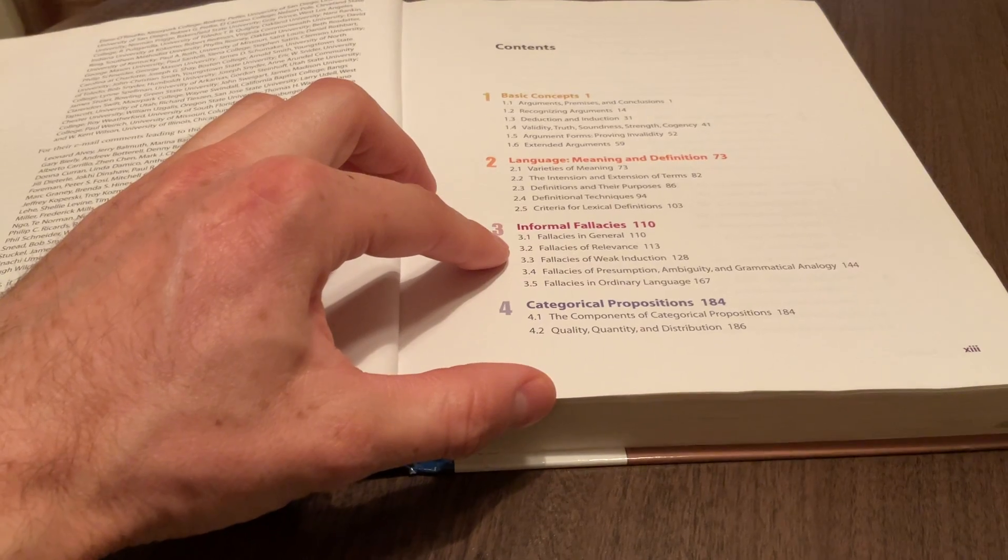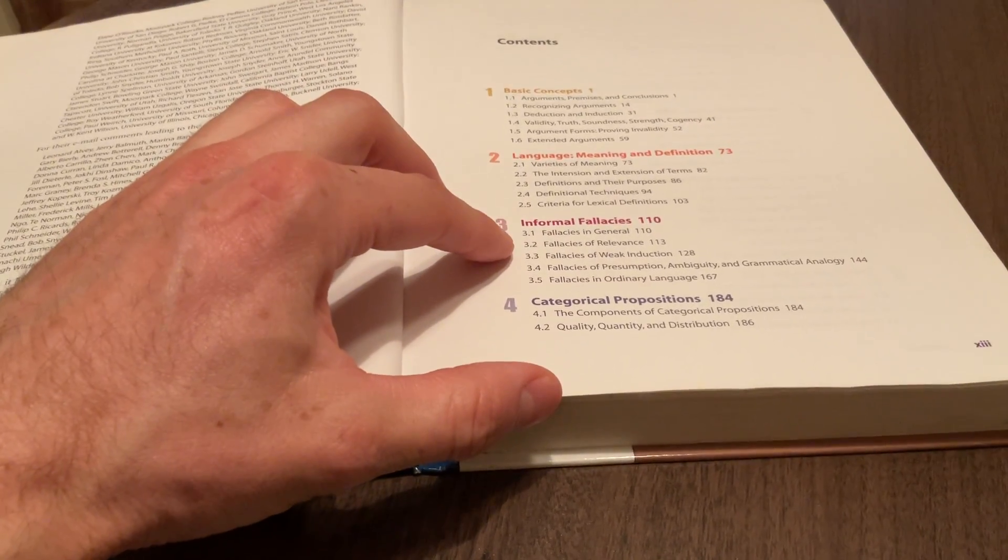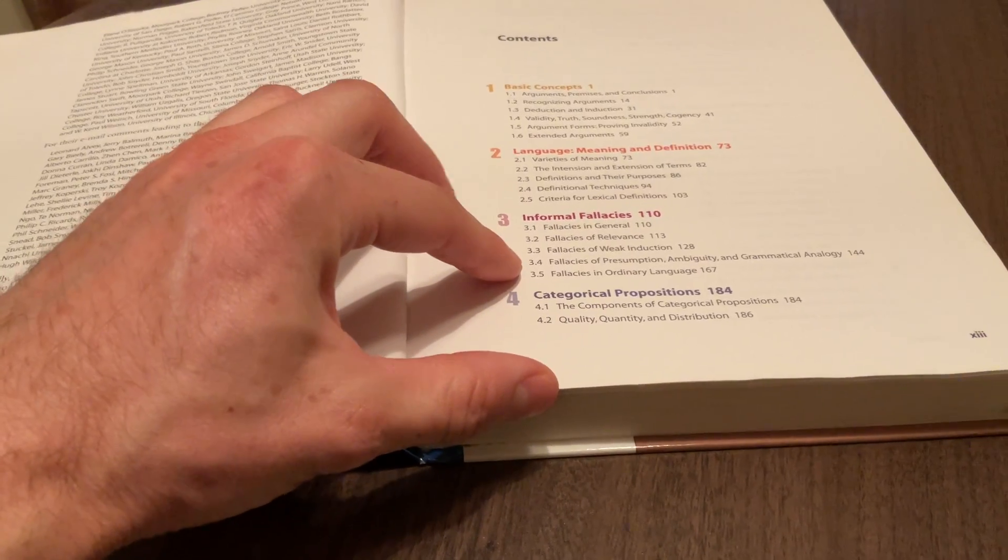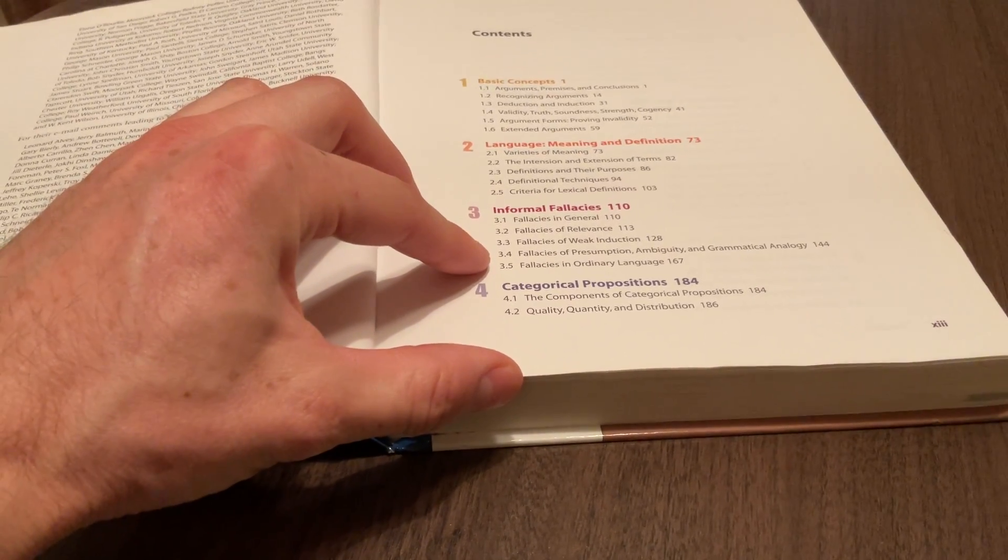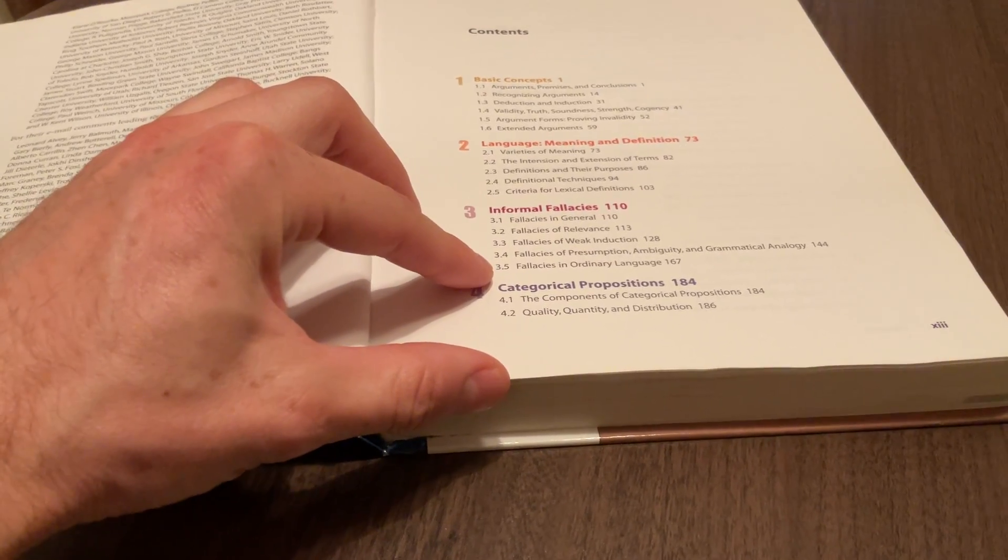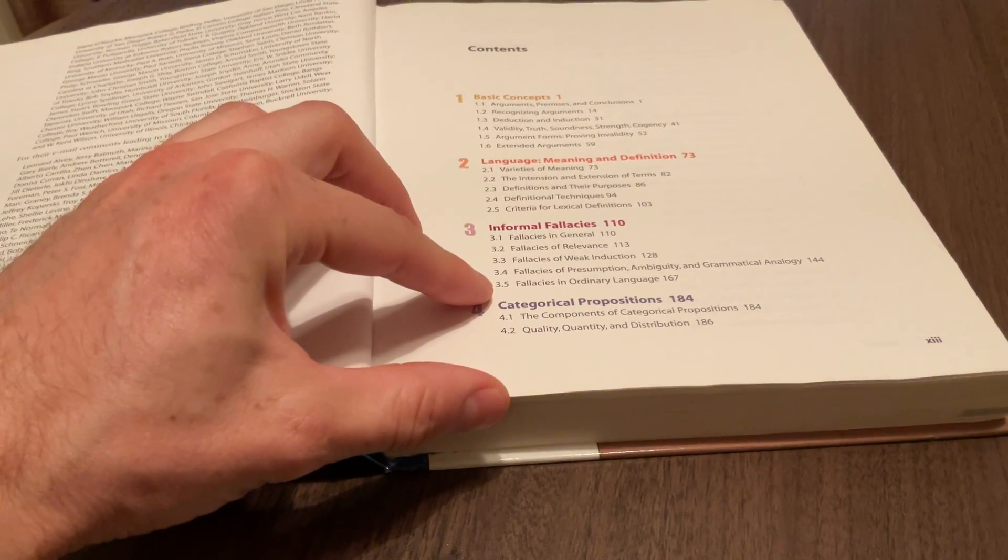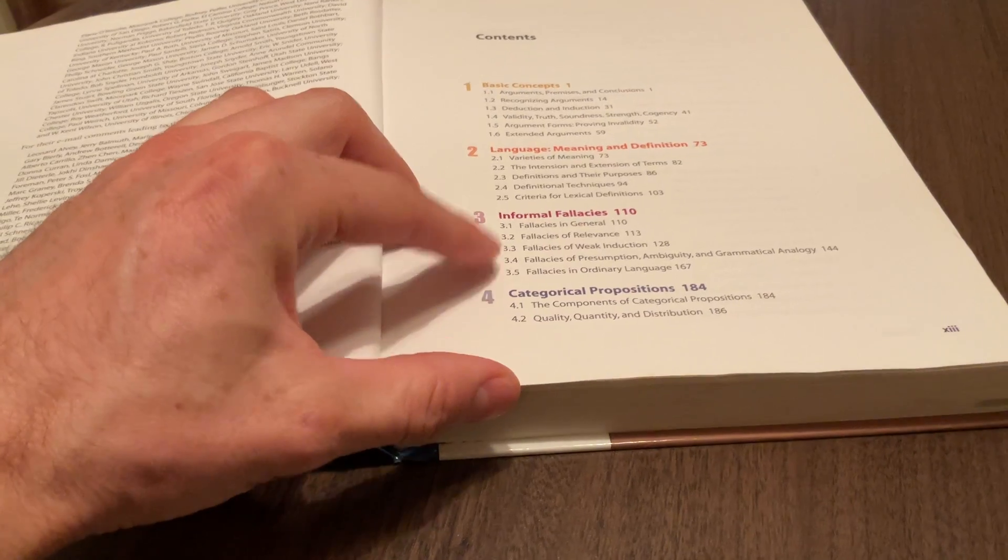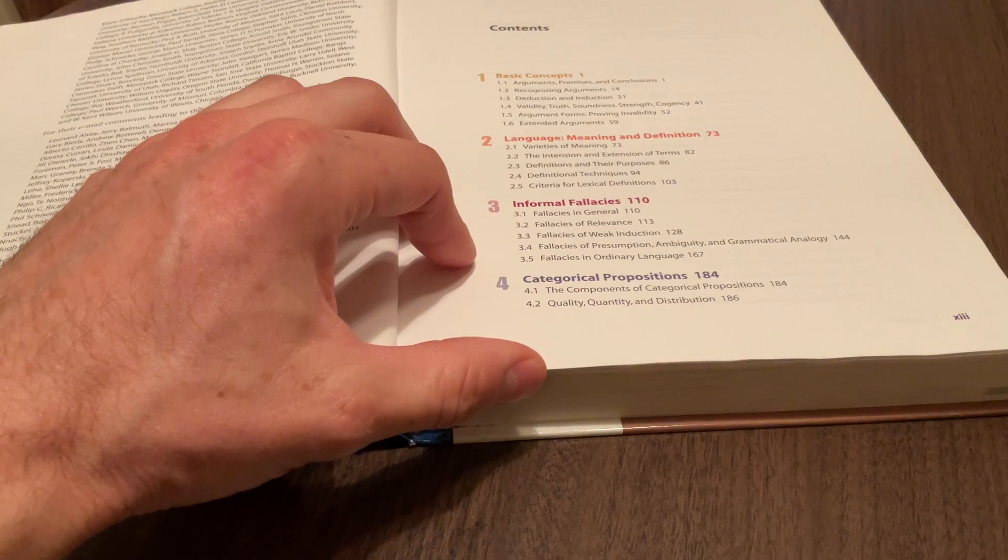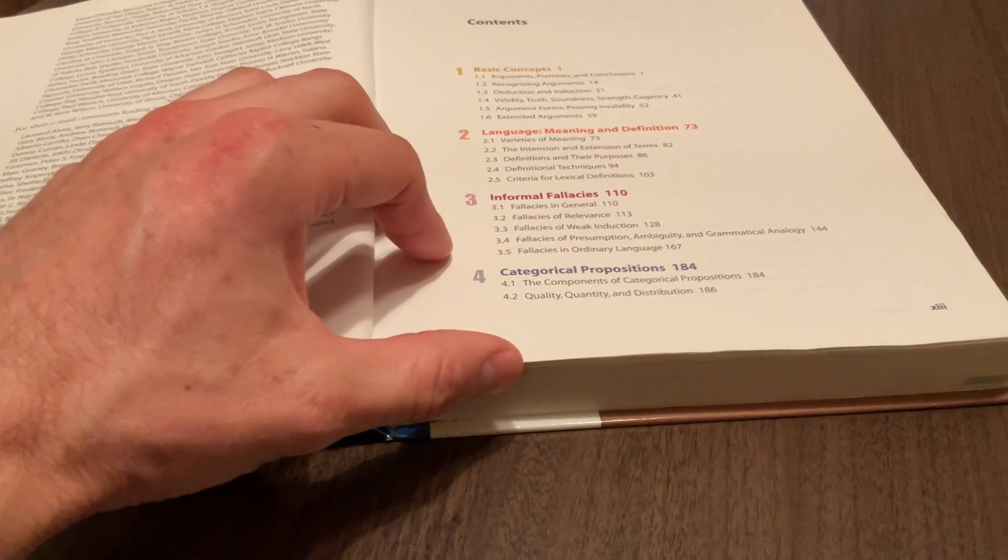Chapter three is on informal fallacies. We have fallacies in general, fallacies of relevance, of weak induction, of presumption, ambiguity, and grammatical analogy, and fallacies in ordinary language. A standard way to classify fallacies would be by relevance, weak induction, and presumption. We can also make a distinction between so-called formal and informal fallacies.